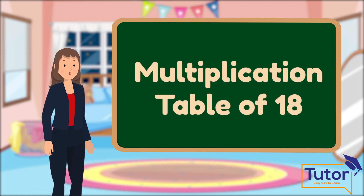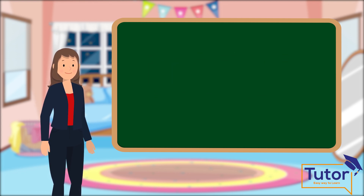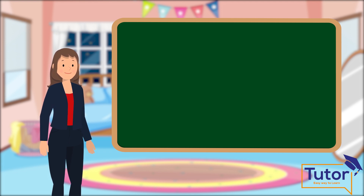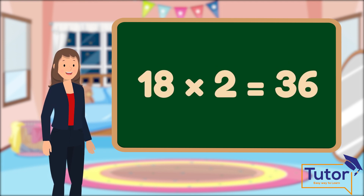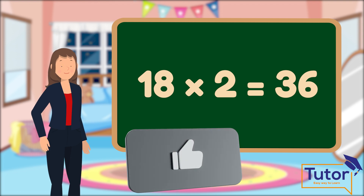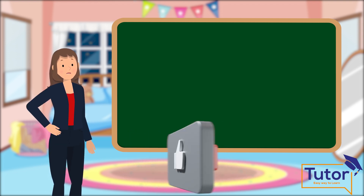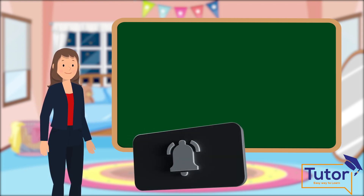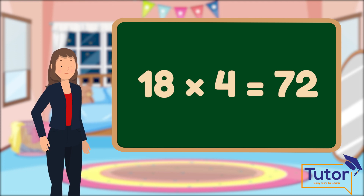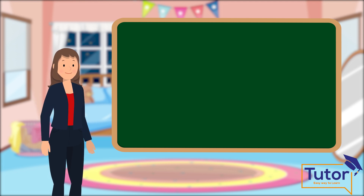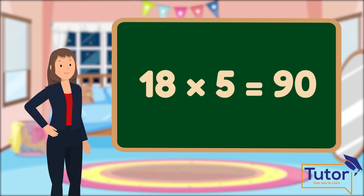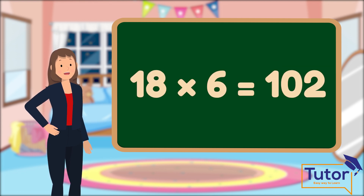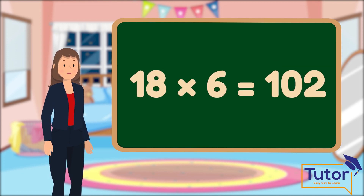Multiplication table of 18. 18 into 1 equals 18. 18 into 2 equals 36. 18 into 3 equals 54. 18 into 4 equals 72. 18 into 5 equals 90. 18 into 6 equals 108.